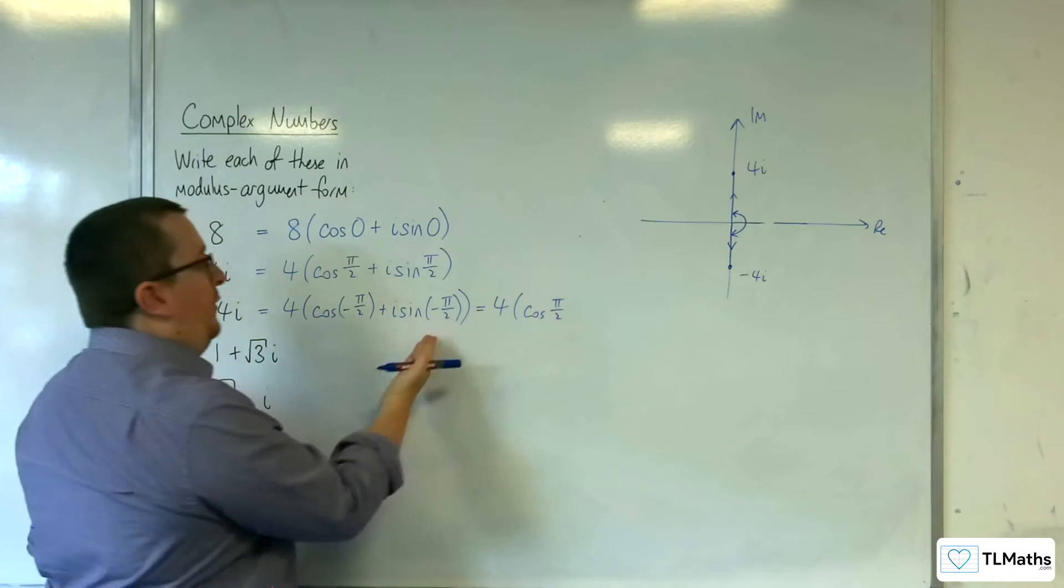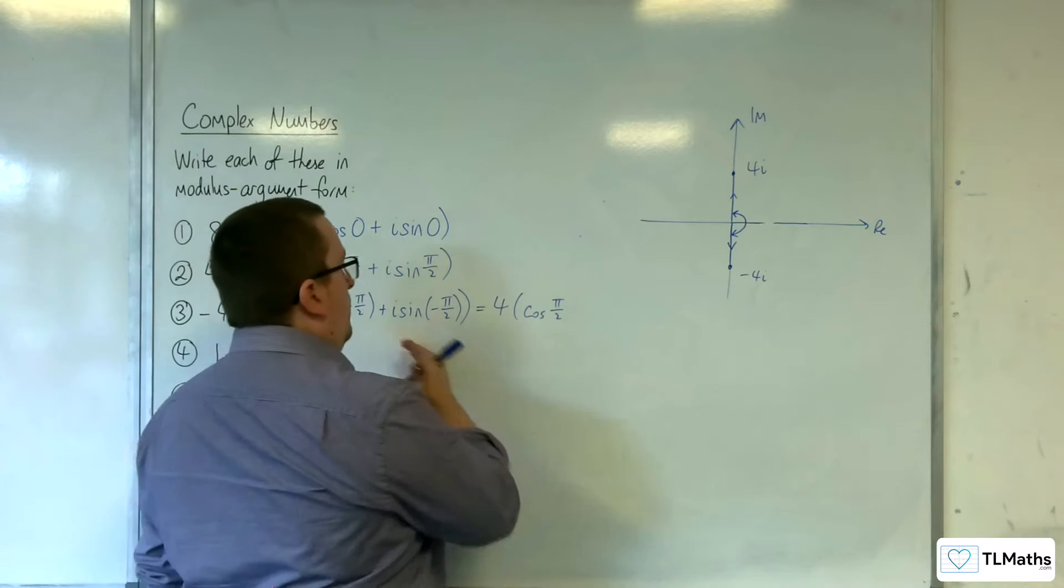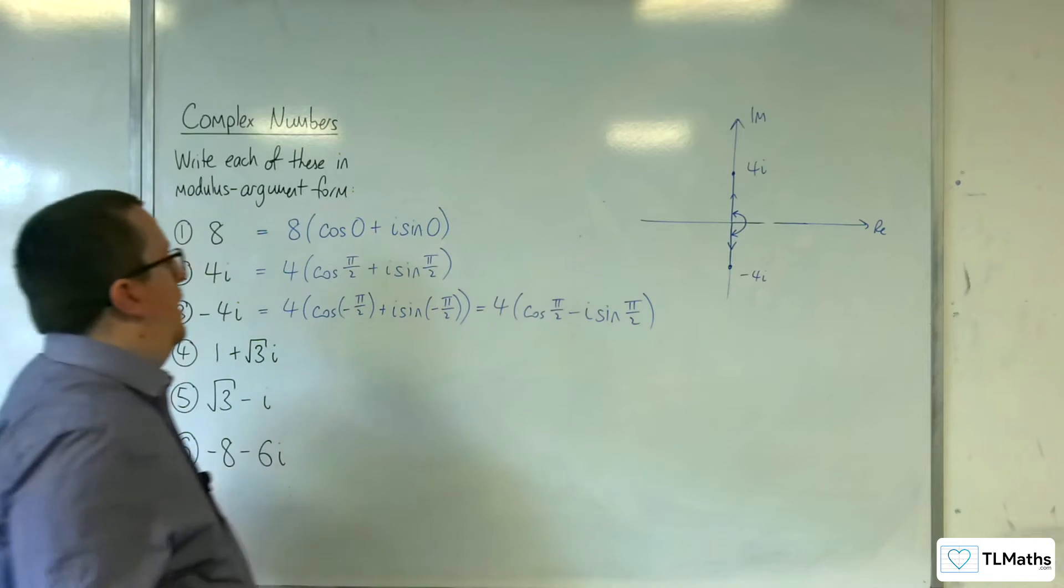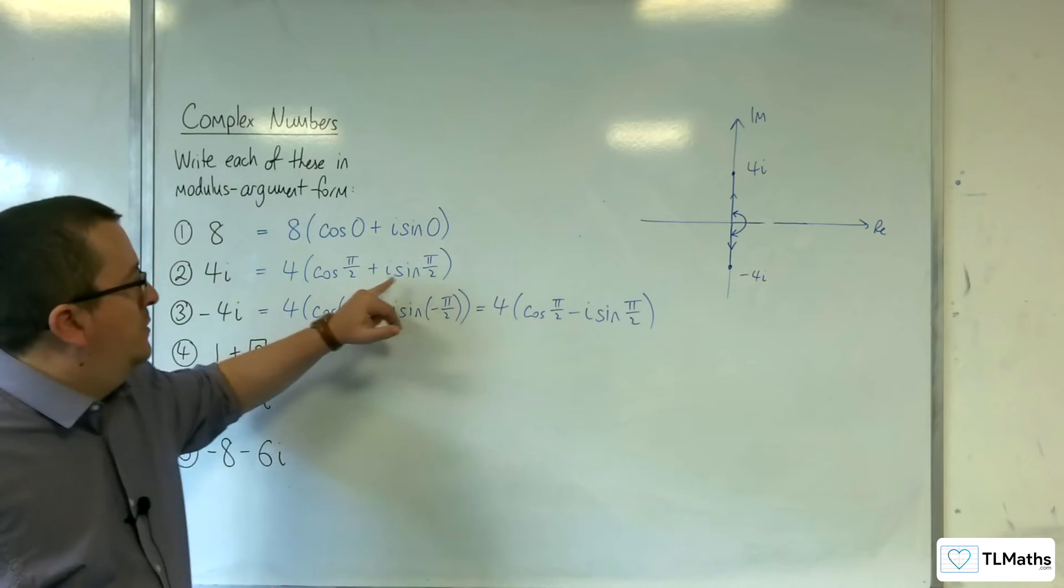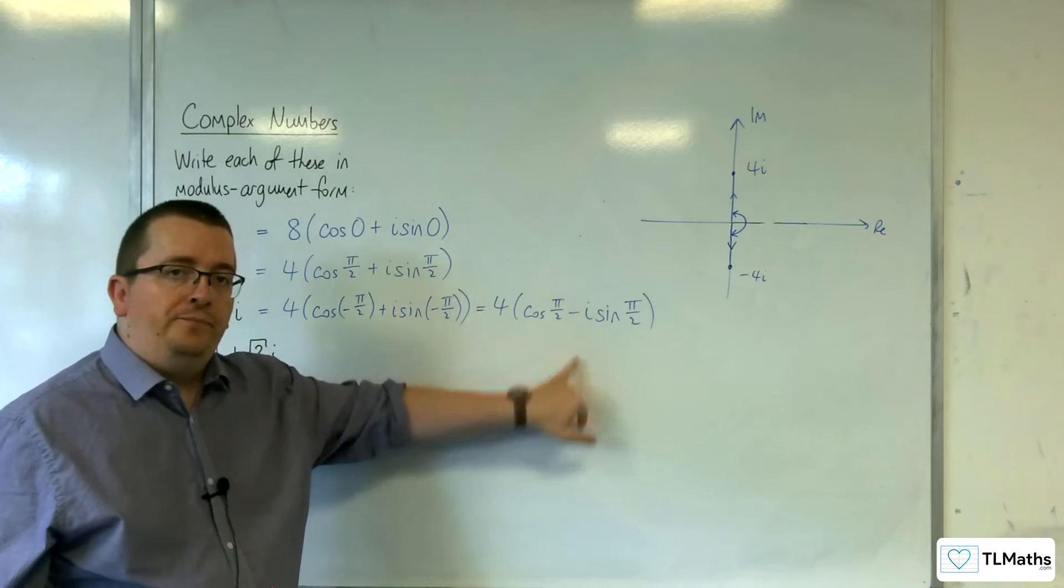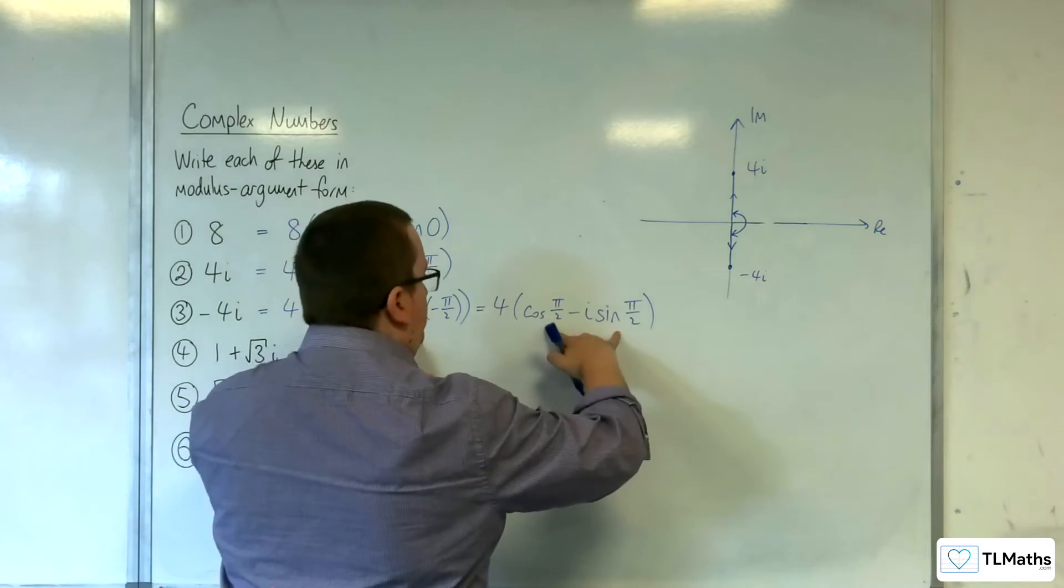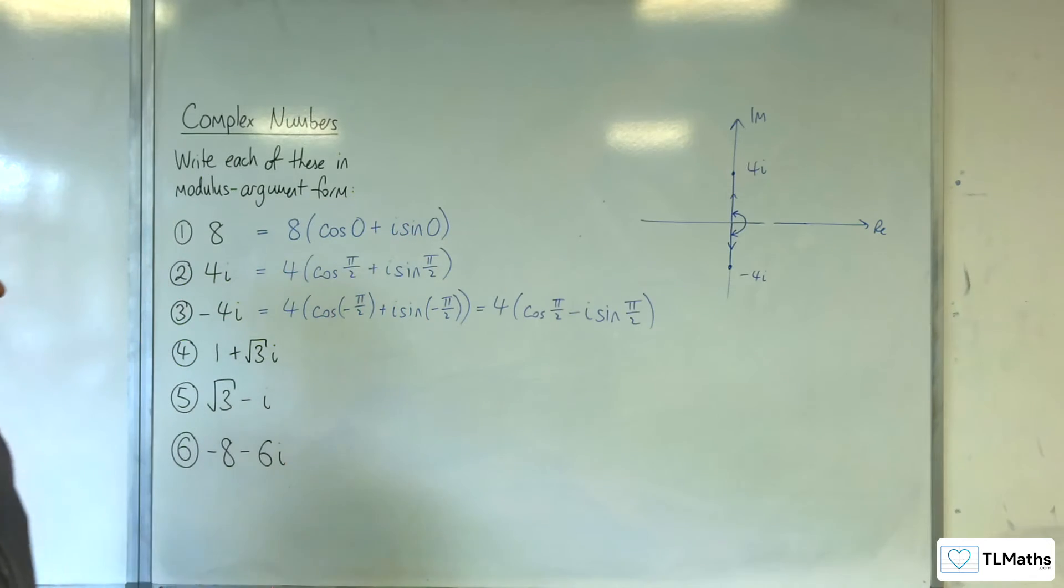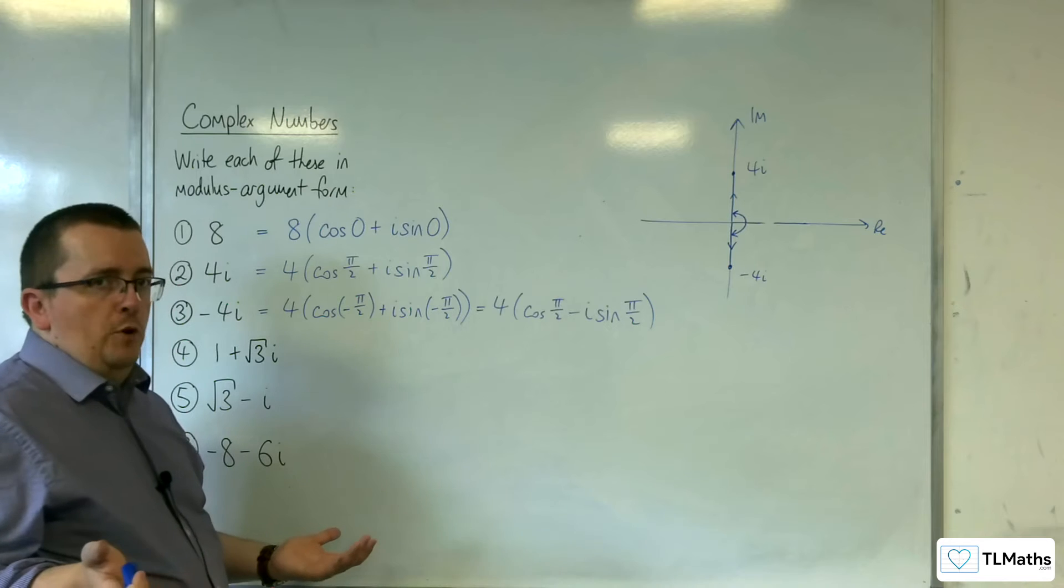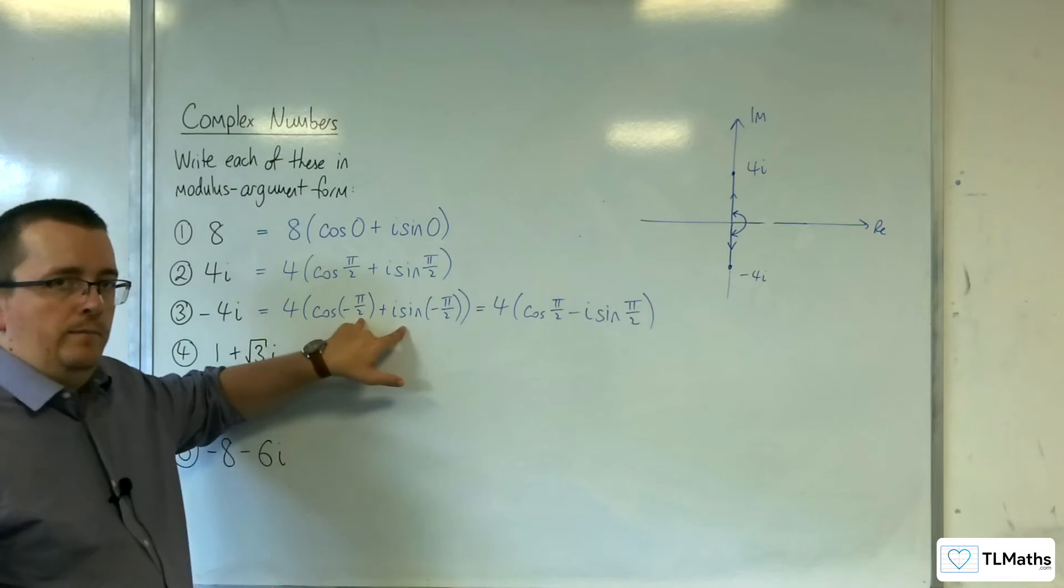And because sine is an odd function, that minus sign can be brought through, and you get this. And that's why these two now look inherently linked as complex conjugates of one another. Those two mean the same thing, and either are really appropriate for modulus argument form.